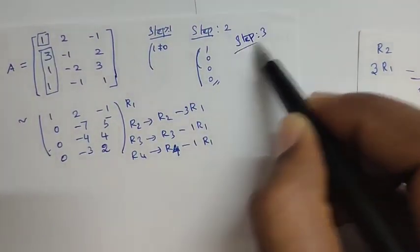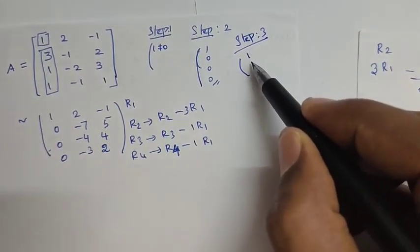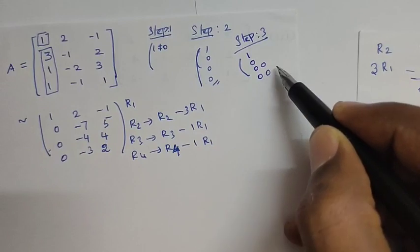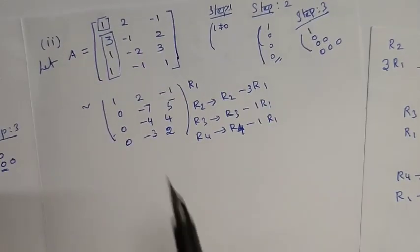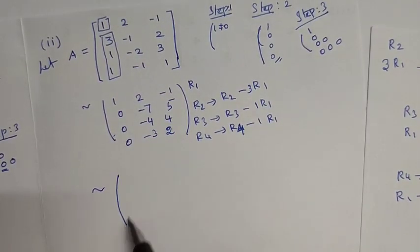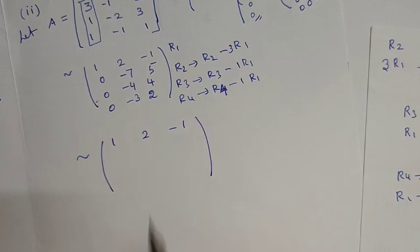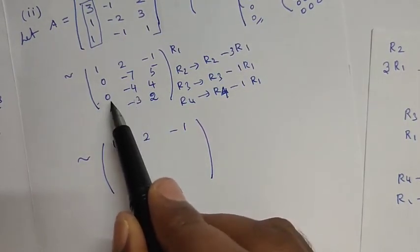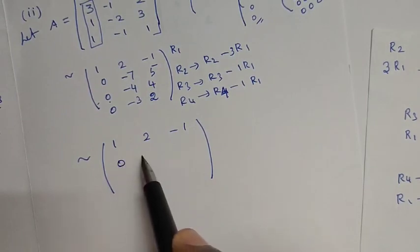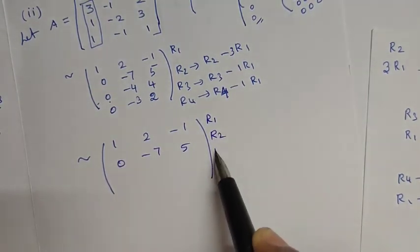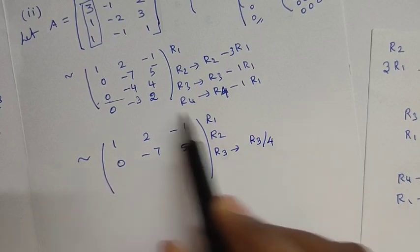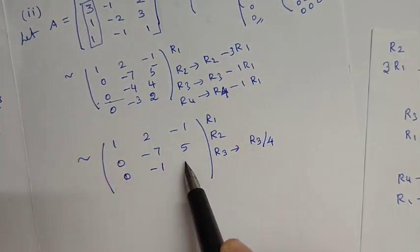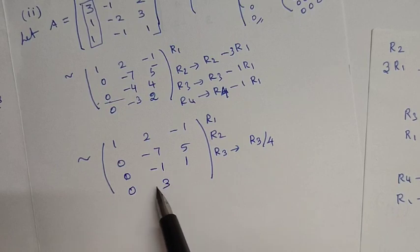Next, I want to move to Step 3. Step 3 means the first leading 1, then zeros below. The matrix now shows R1 as 1, 2, minus 1. R2 is 0, minus 7, 5. R3 is divided by 4, giving 0, minus 1, plus 1. That means 0, minus 3, and 2.